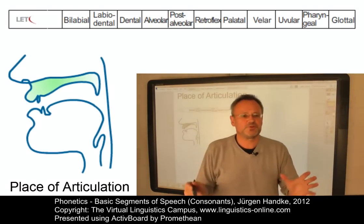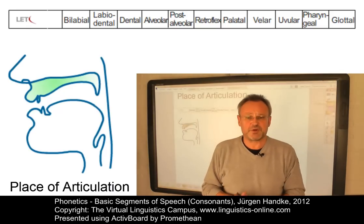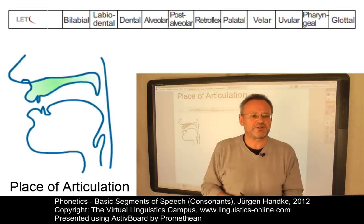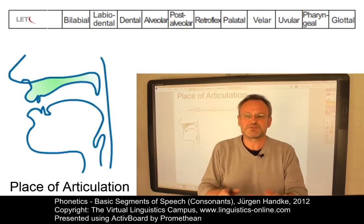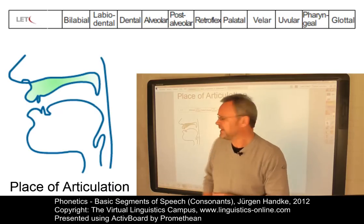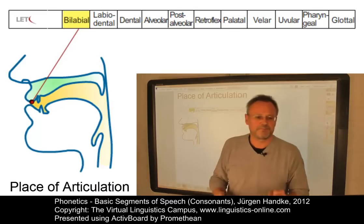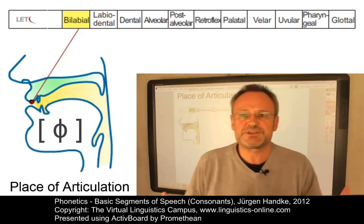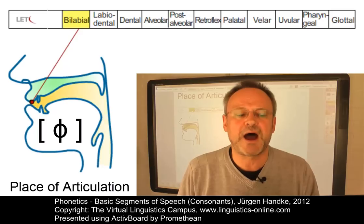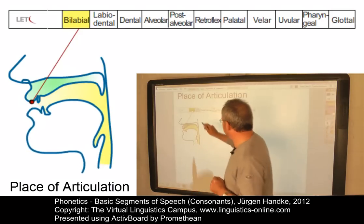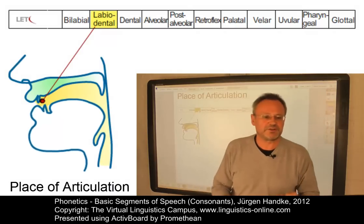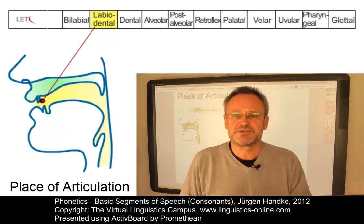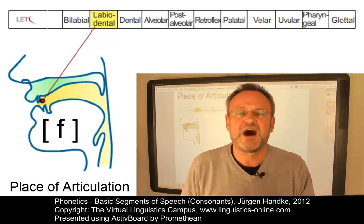The position where the contact between an active and a passive articulator is produced is referred to as the place of articulation. I will now produce one fricative consonant per place of articulation, between two vowels for better audibility. Starting with bilabial consonants, we can observe a constriction between the lips — the result is something like 'a-φa'. The next place is labiodental, where we observe a constriction between the lower lip and the upper teeth — a typical consonant would be 'a-fa'.